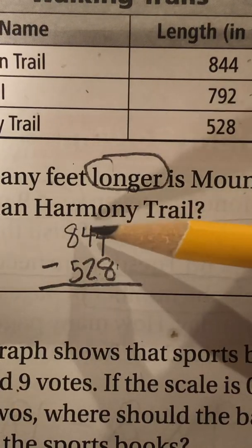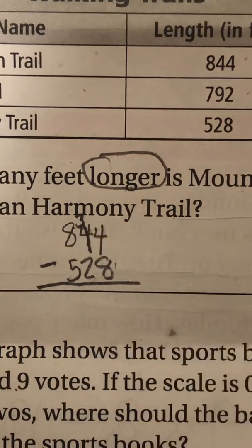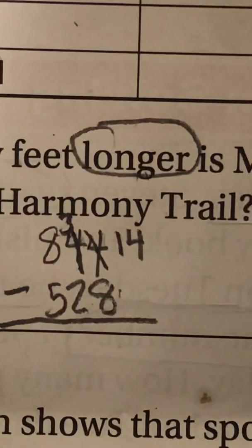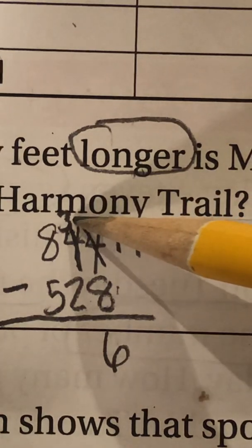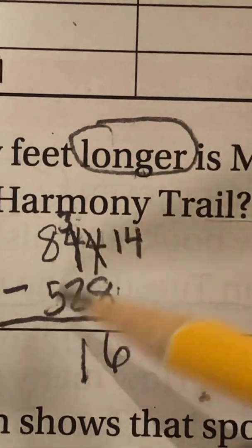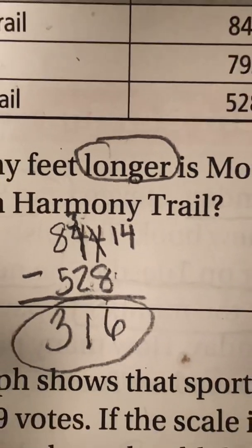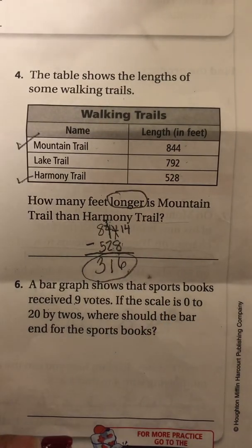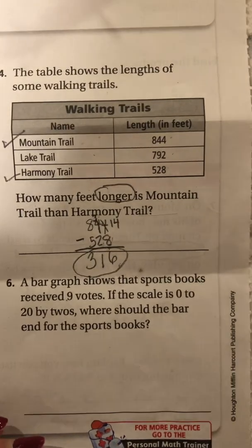There's more on the floor, so I have to go next door and find 10 more — we've already learned this, so this is a review. Cross out the 4, make a 3, and put 10 with 4 to get 14. So 14 minus 8 is 6. Now in the tens place: 3 minus 2 is 1. And 8 minus 5 is 3. So our final answer is 316. The mountain trail is 316 feet longer than the Harmony Trail, because that's what the question asked.